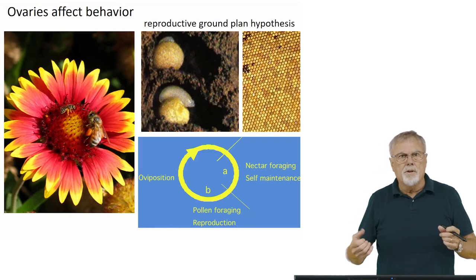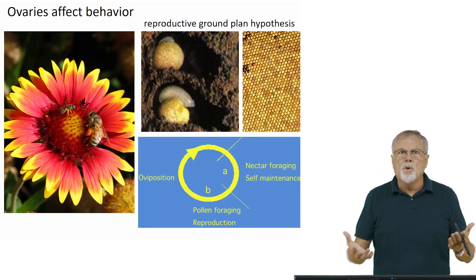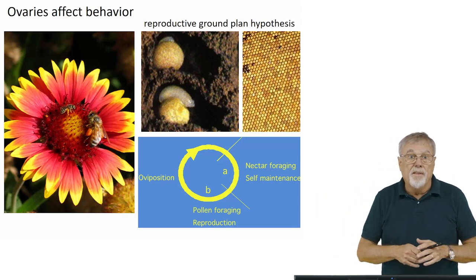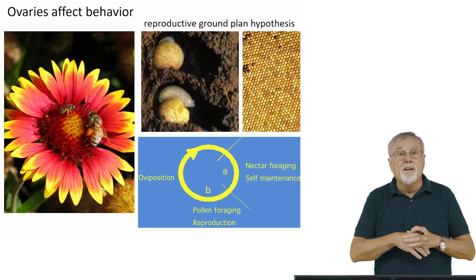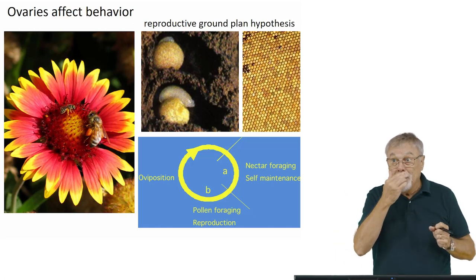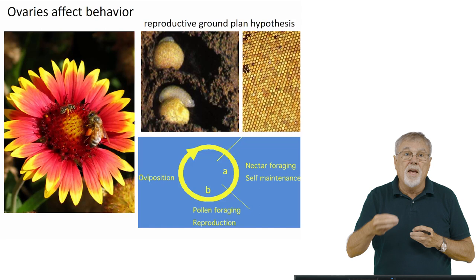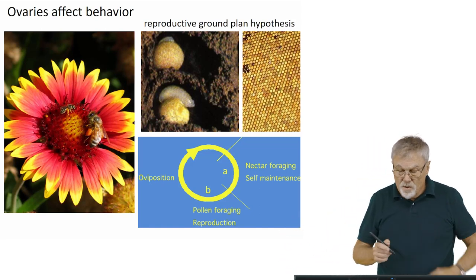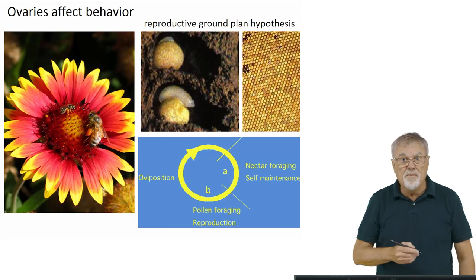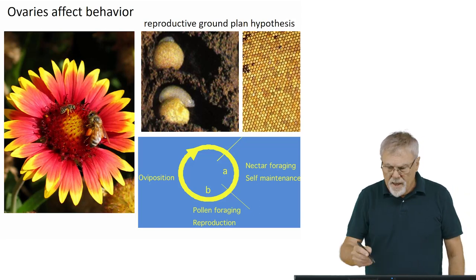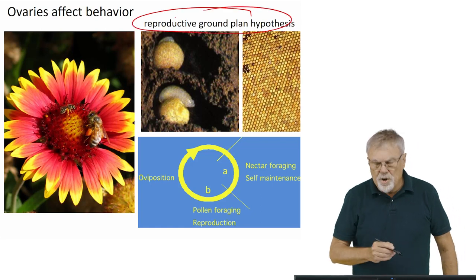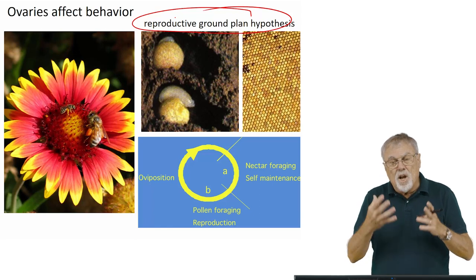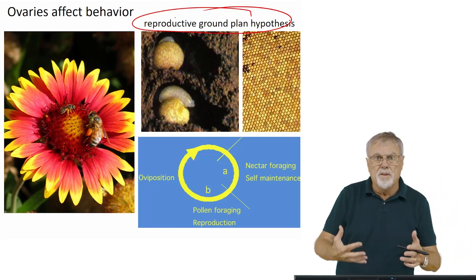Ovaries affect behavior. Virtually all higher organisms that have ovaries — from humans to turtles — are affected by ovarian cycles of egg production in their behavior. In honeybees, we think that the ovaries are affecting foraging behavior, and we call that the reproductive ground plan hypothesis.